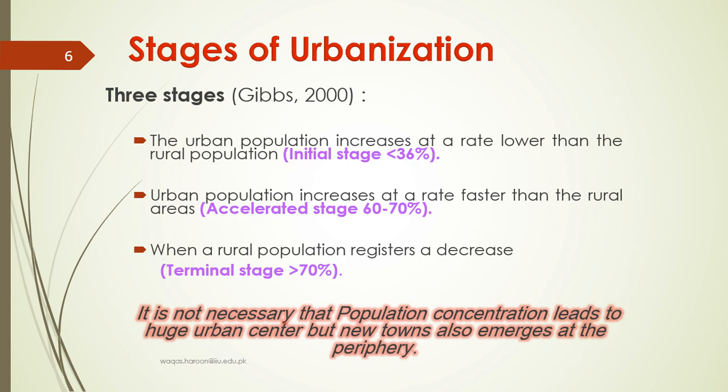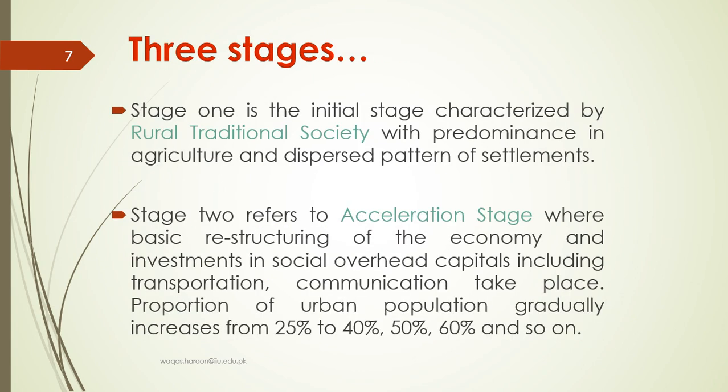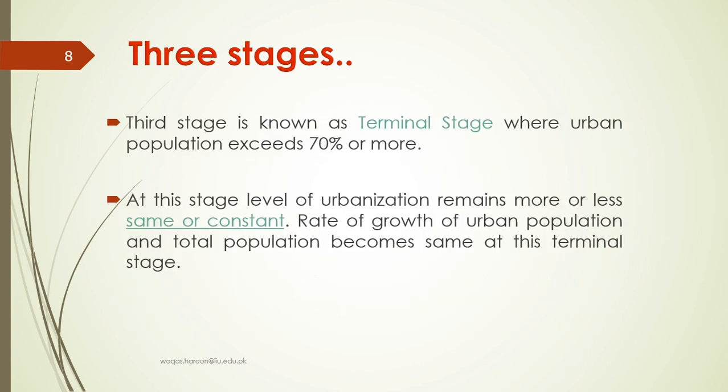The first is the initial stage, where it's all rural population and the population accelerates from 60 to 70. In traditional society, the population ranges from 36 to 76. In the acceleration stage, the process of restructuring occurs, with the population moving from 25 to 70, and then the terminal state becomes urban.